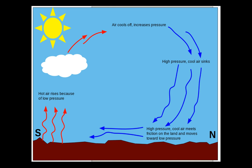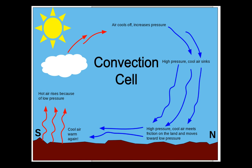What is the wind like here? It would be very windy, blowing from the north to the south. The air heats up again and the cycle continues. This entire cycle is called a convection current, and it can happen on a large global scale or on a local scale.